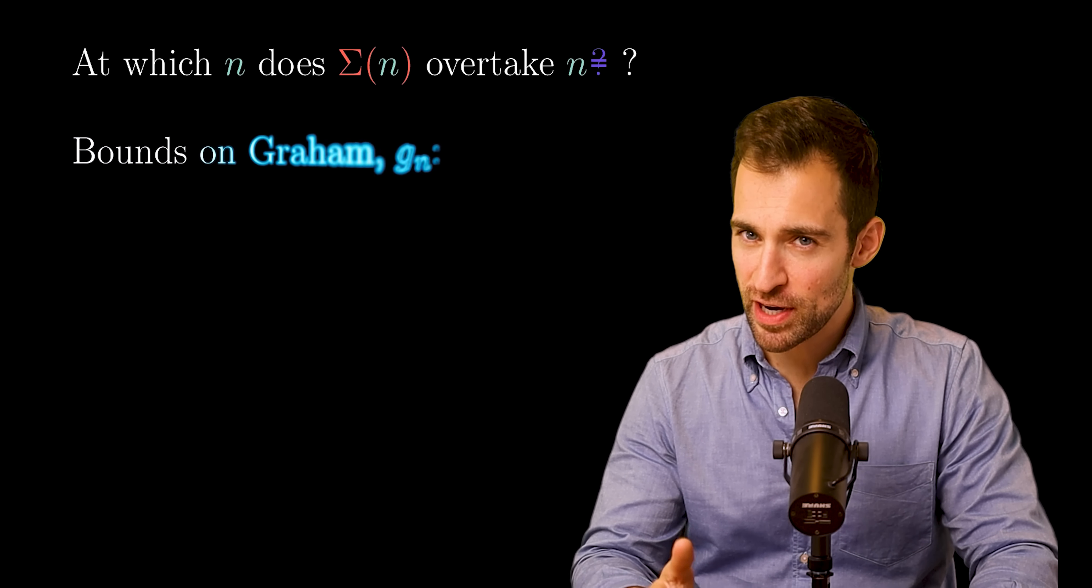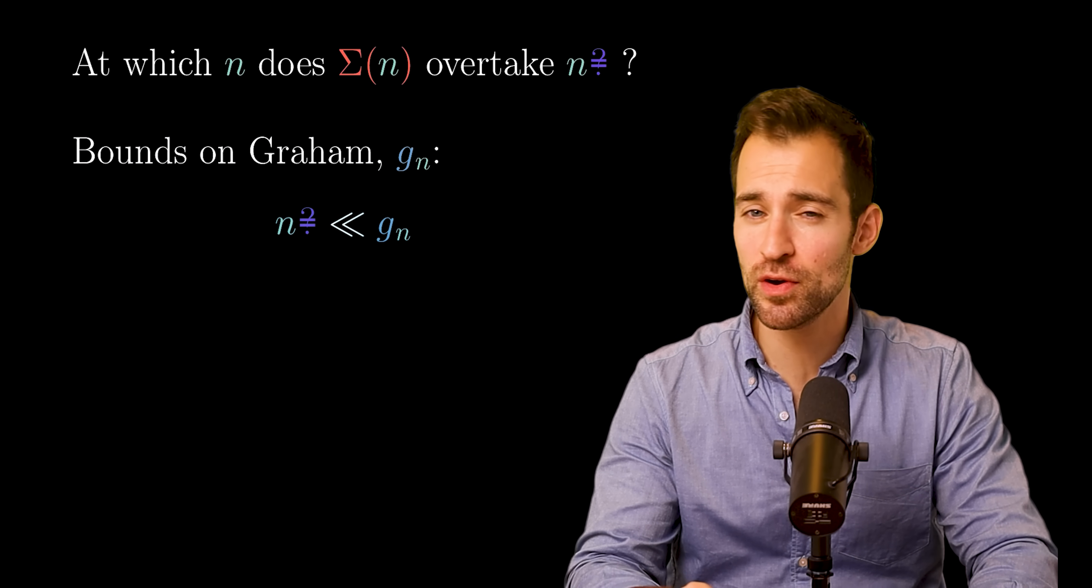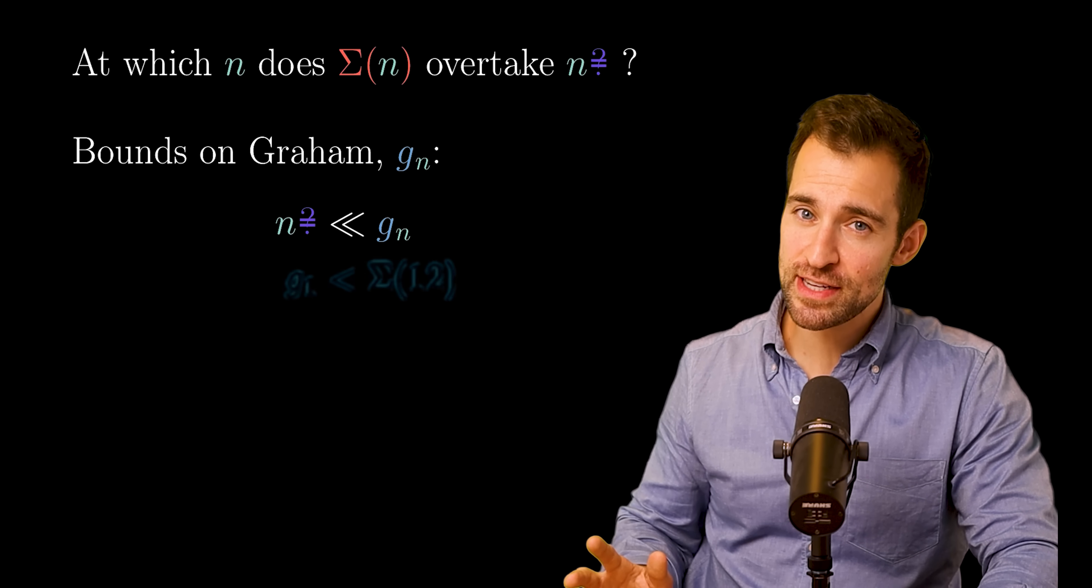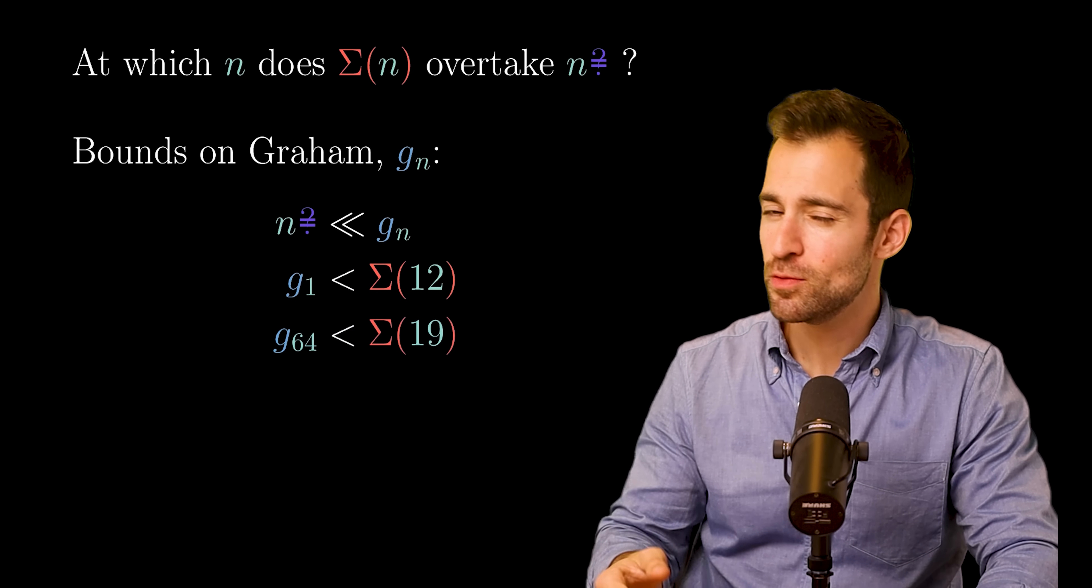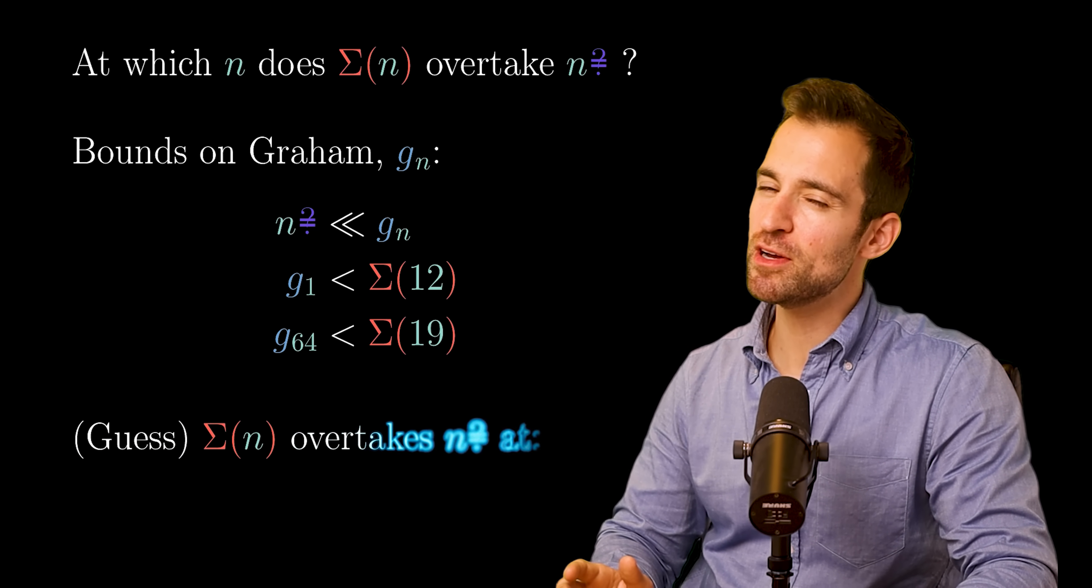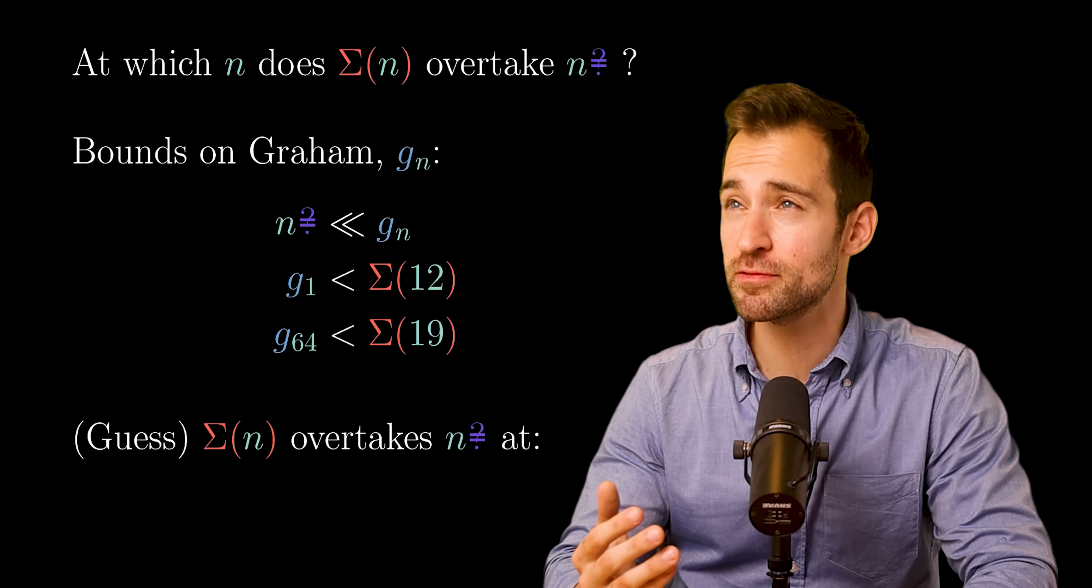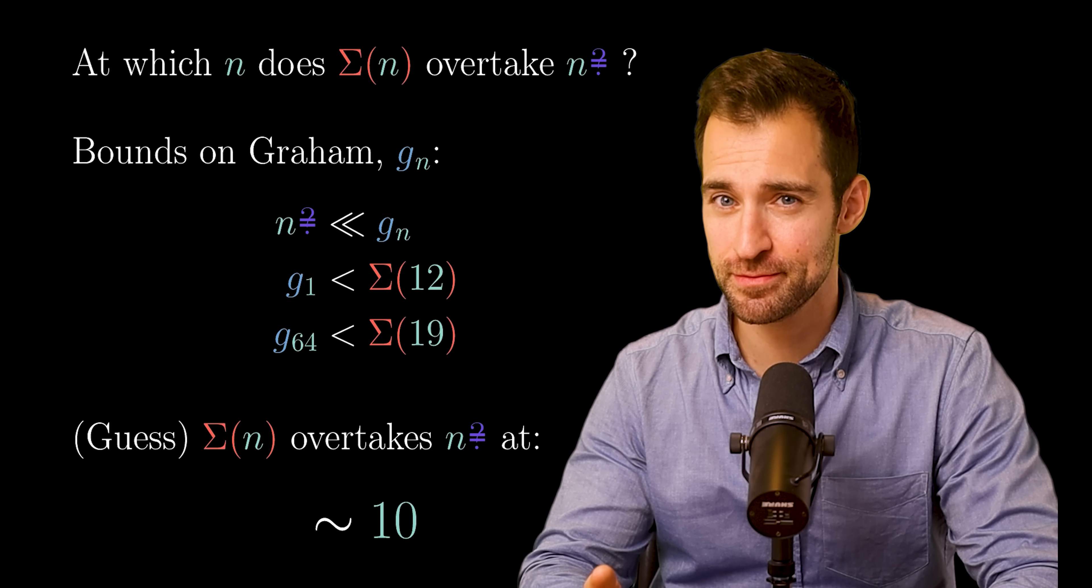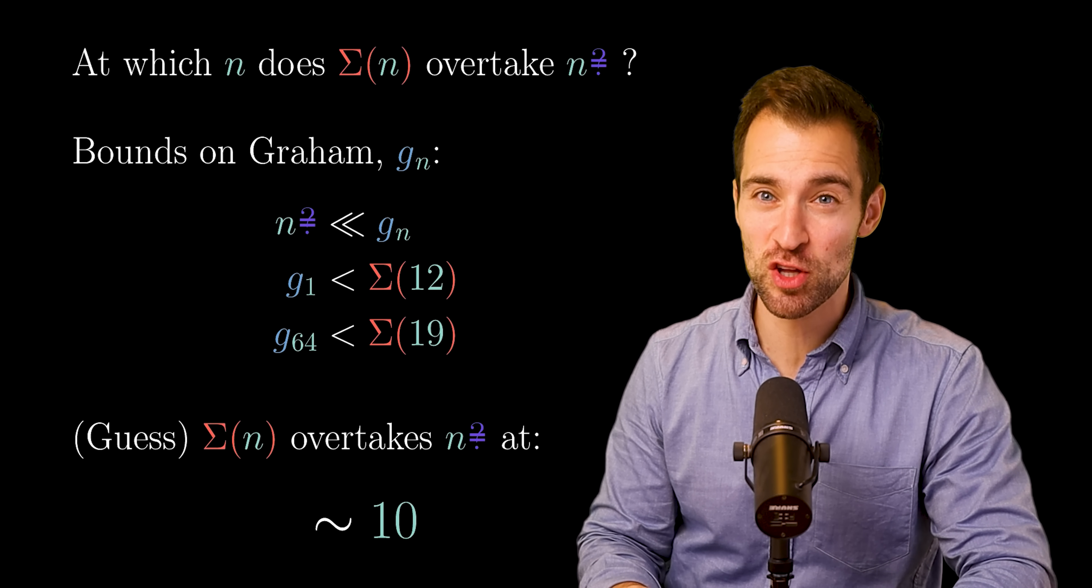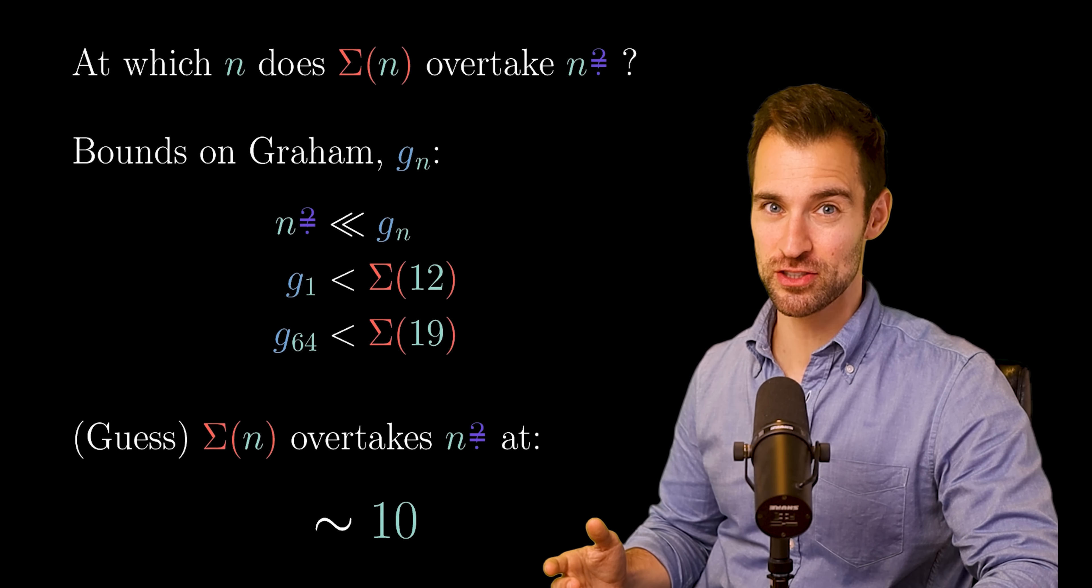Well, we can use some bounds on Graham's number, which is a much faster growing function than mine. To relate Graham and sigma, we know this and this, which are probably very loose bounds. This makes me guess sigma overtakes my function probably around 10. Just a guess. I wouldn't be surprised if it's 8. The point is, we are barely off the kiddie slope and busy beaver wrecks my function.